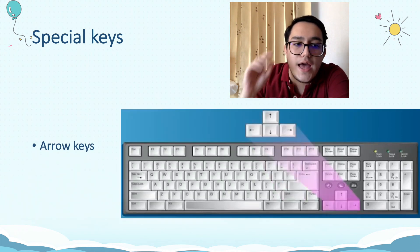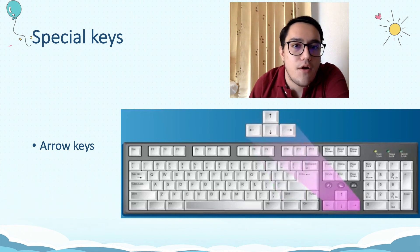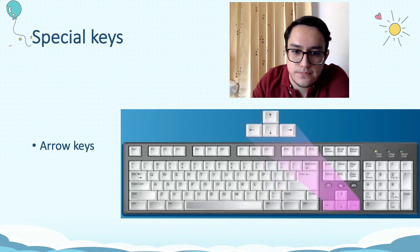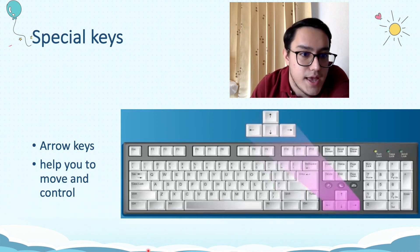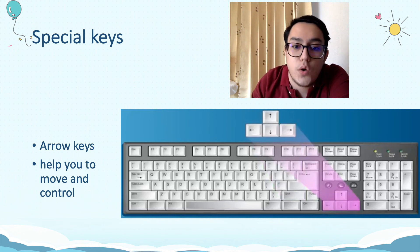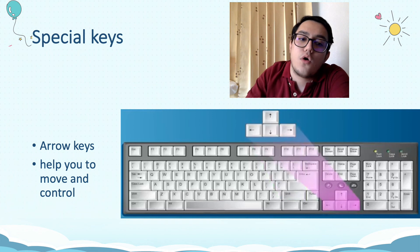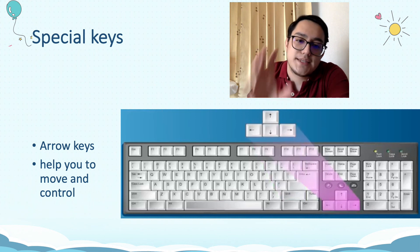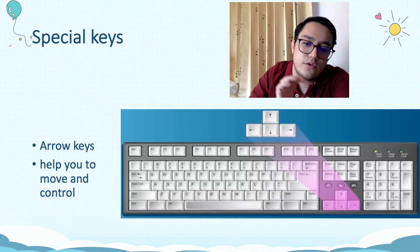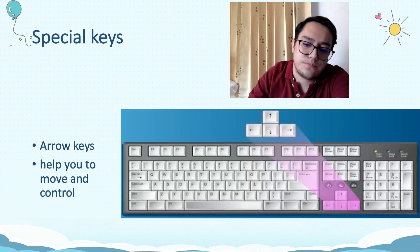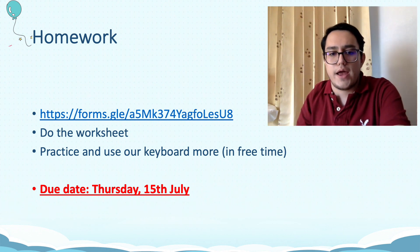Next, we have the arrow keys. What do the arrow keys do? Do you know? It helps you to move and control what's going on on your screen. So if you play a game, or if you are typing, or anything, it can help you to control what's on your page. For example, if you're typing, by clicking the arrow keys, it can go up, down, left, or right.